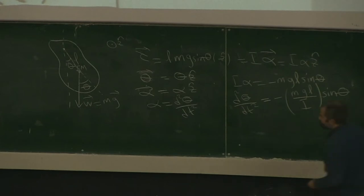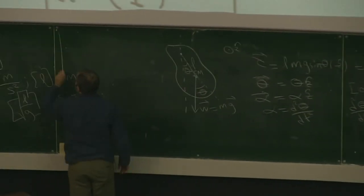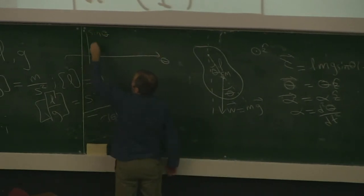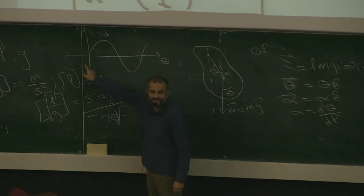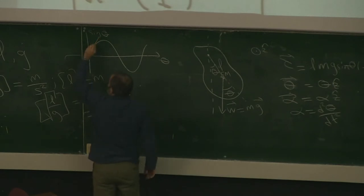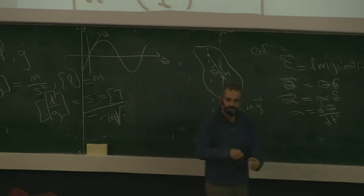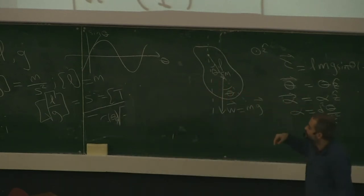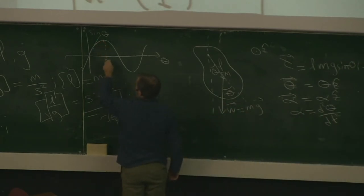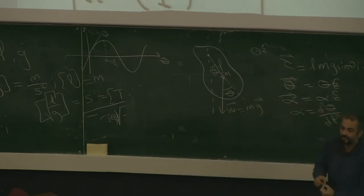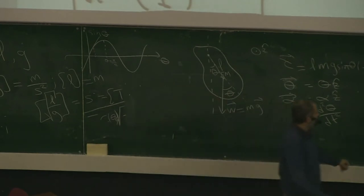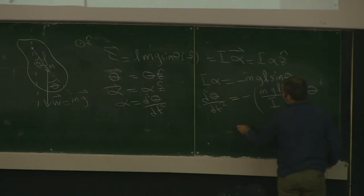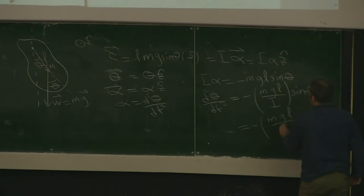Sine is a nice function. If you consider the graph of sine theta as a function of theta, close to theta equals zero the slope is 1. So close to this region the sine function is almost a straight line with slope 1. So as long as the amplitude is small, sine theta is approximately theta. This gives us: the second time derivative of theta equals minus mgL over I times theta.